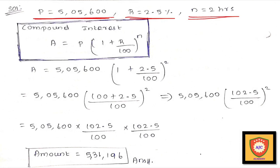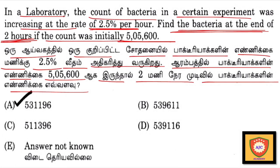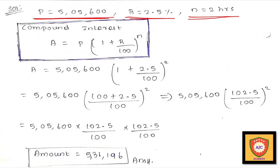This is a compound interest problem. Since the rate of the experiment is increasing, it is automatically compound interest. That's why we substitute the compound interest formula: A equals P into 1 plus r divided by 100, raised to the power n.